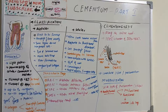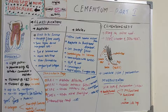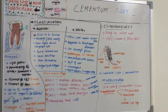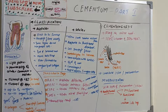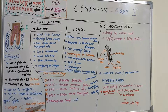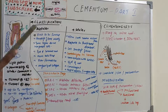By volume: 45% inorganic matter, 30% organic matter, and 20% water. There are two sources of collagen fibers in cementum. First, Sharpey's fibers or extrinsic fibers, which are the embedded portion of the principal fibers of the periodontal ligament formed by fibroblasts — we studied Sharpey's fibers in detail in the periodontal ligament section.